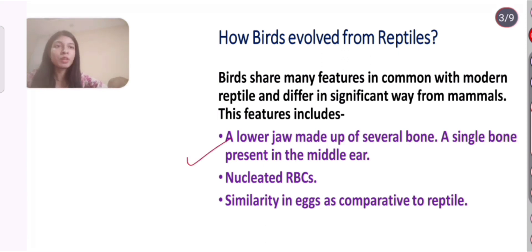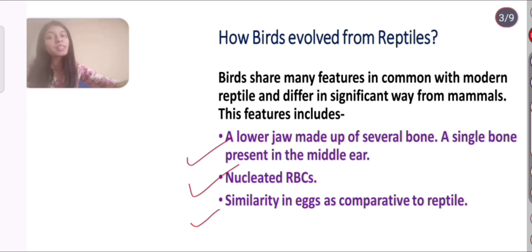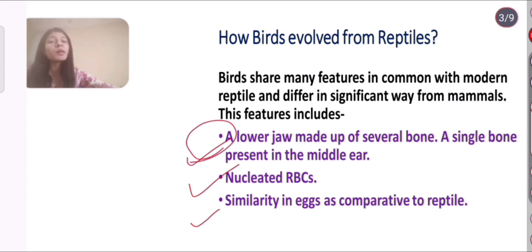The shared features between birds and reptiles include: first, a lower jaw made up of several bones; a single bone present in the middle ear; second, nucleated red blood cells (RBCs); and third, similarity in eggs compared to reptiles. These are some common characters between reptiles and birds.